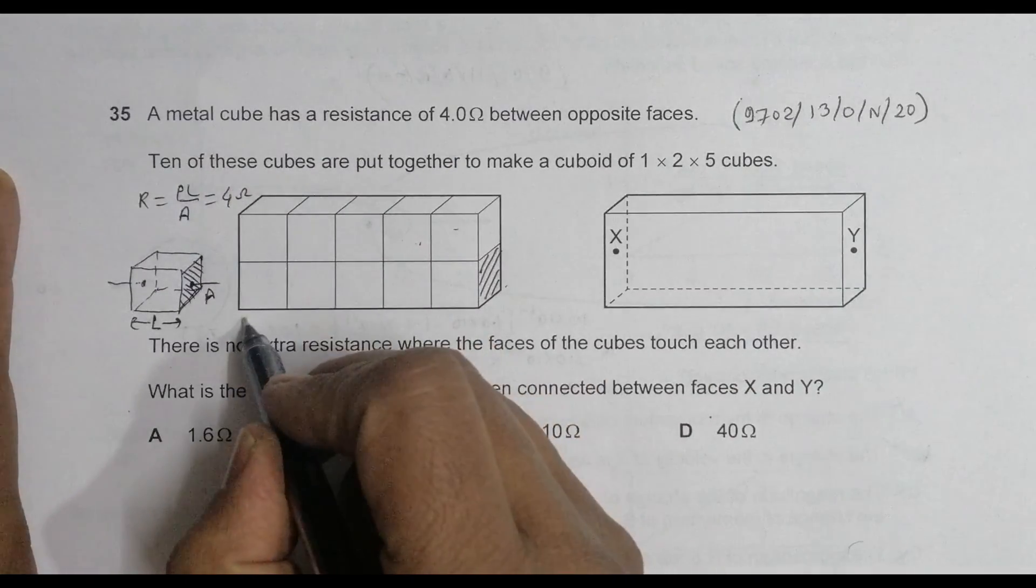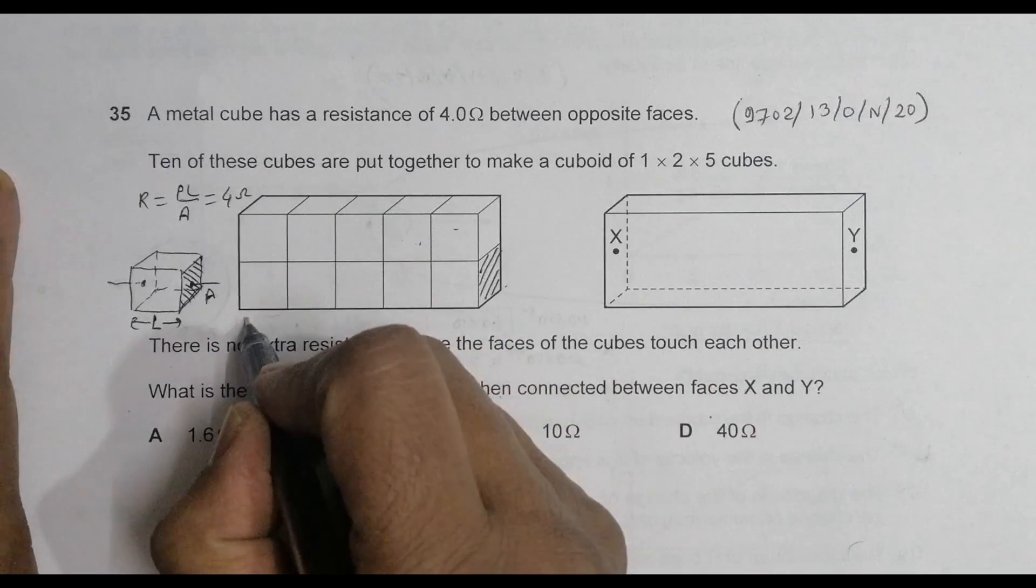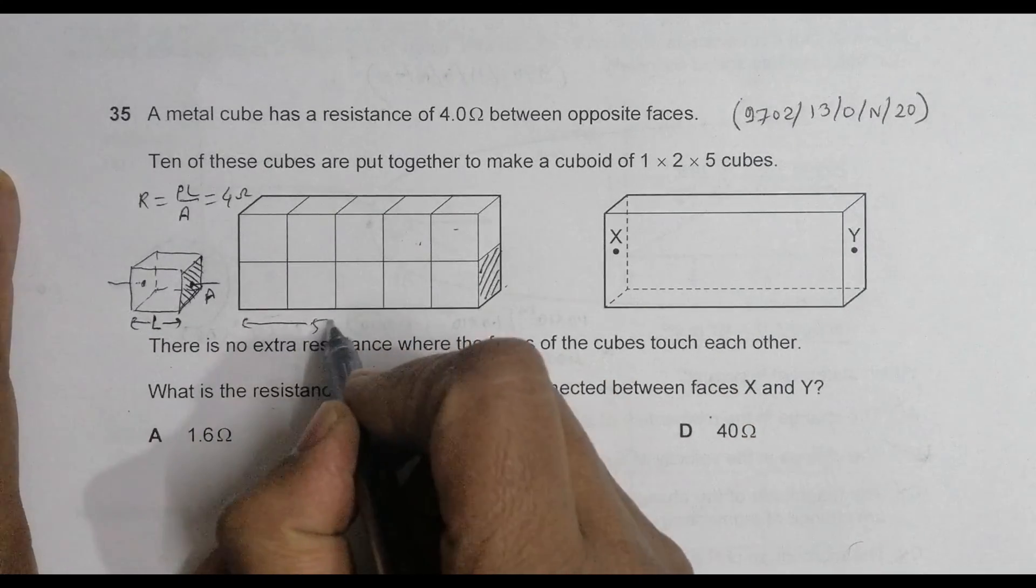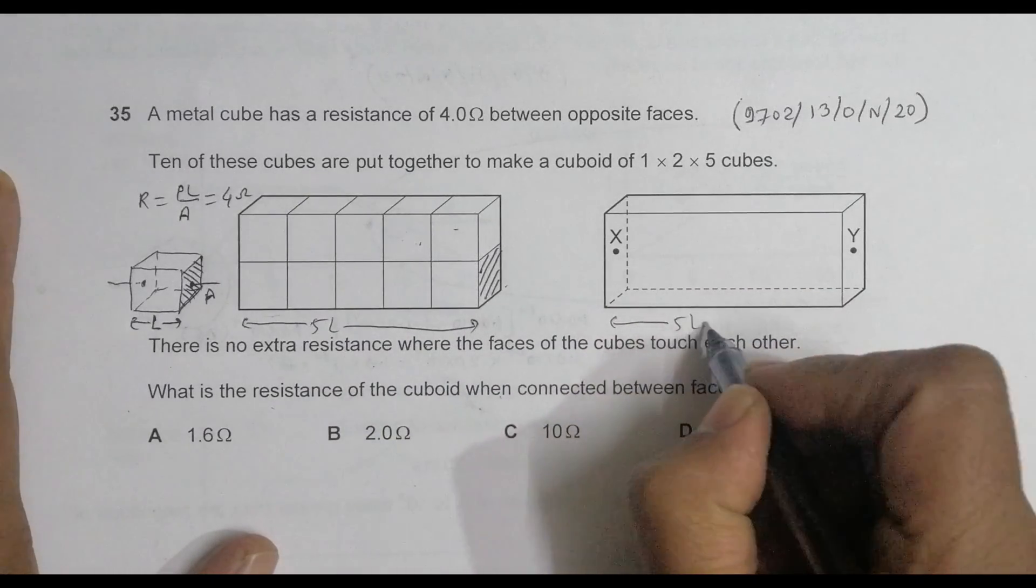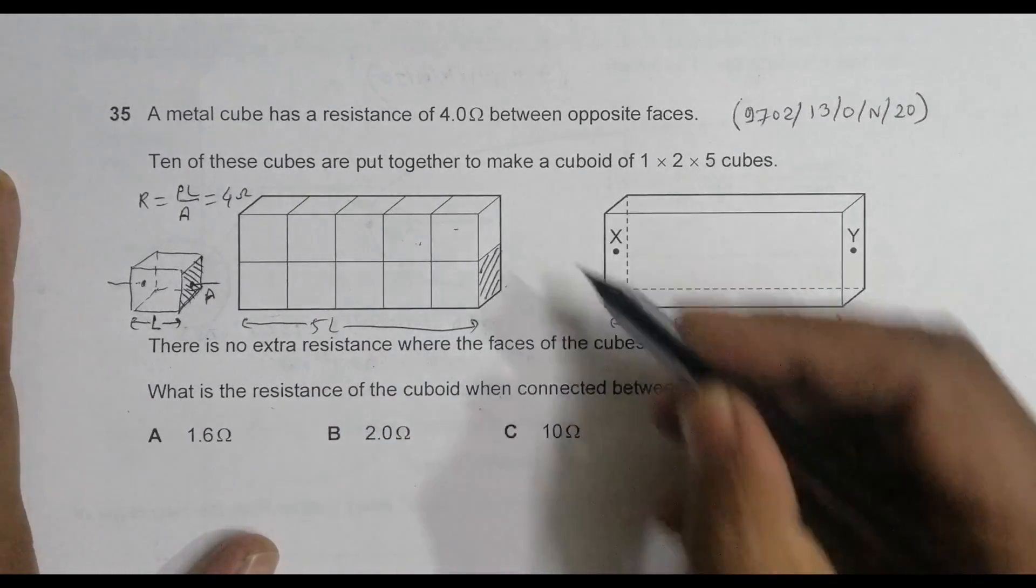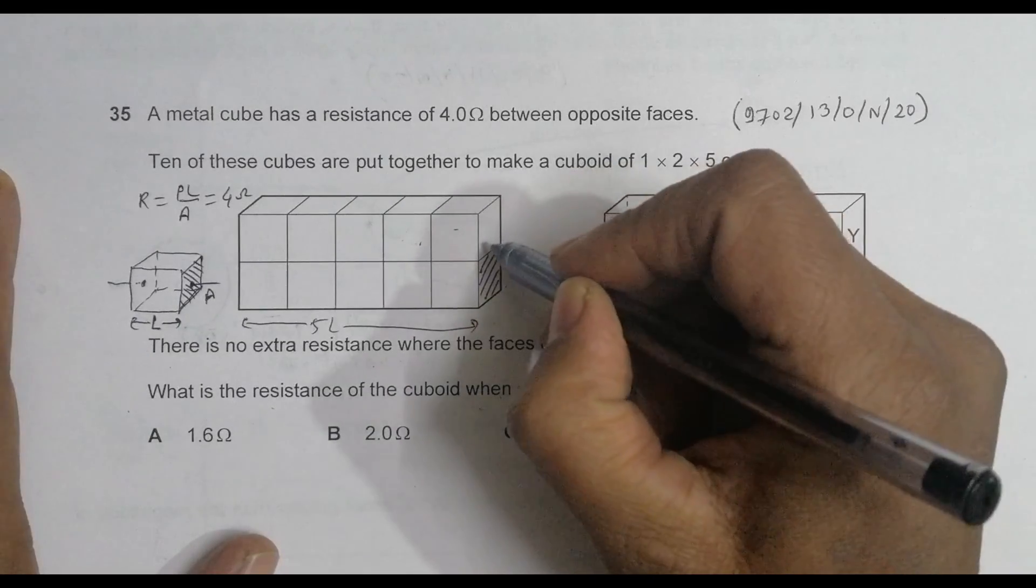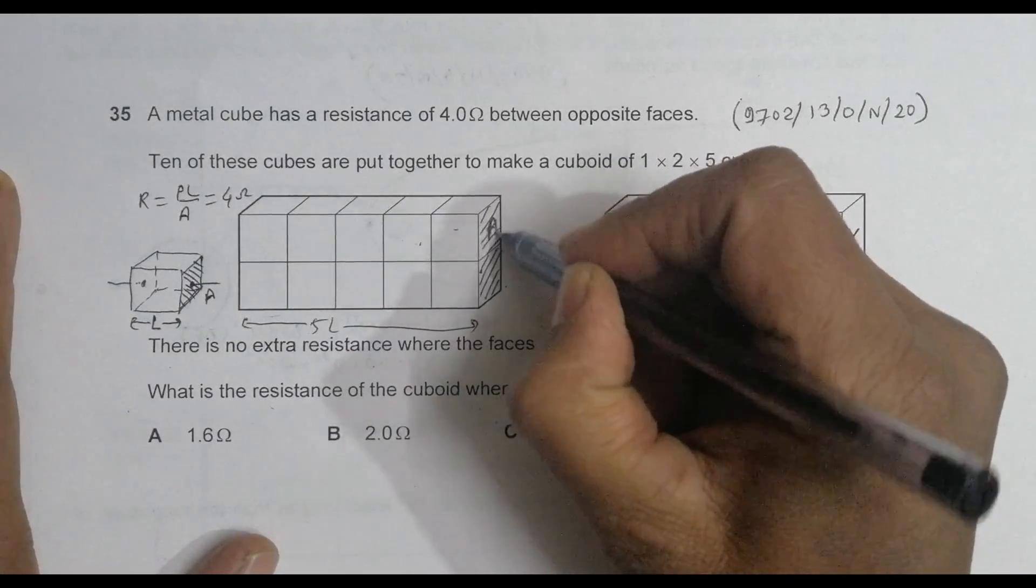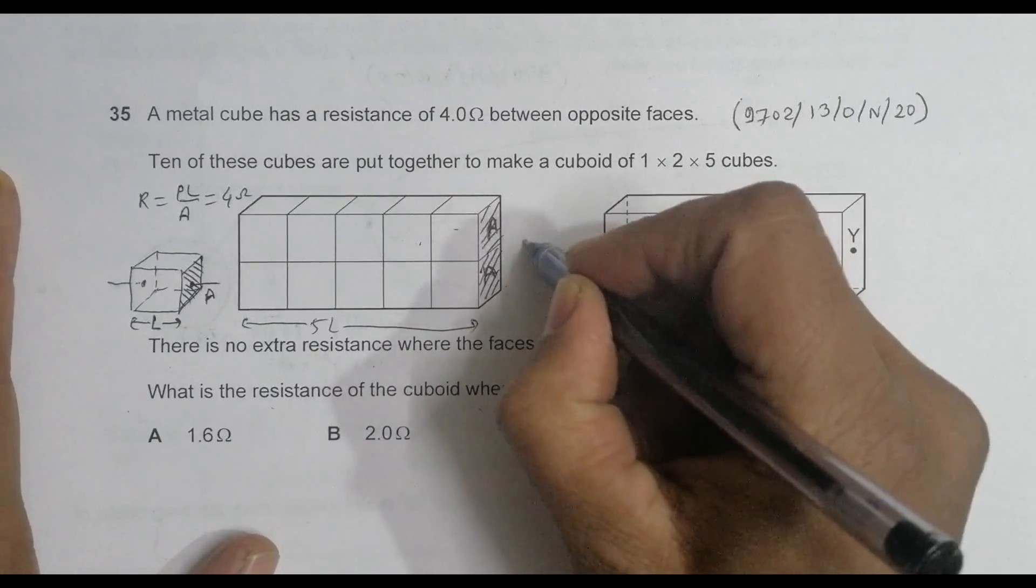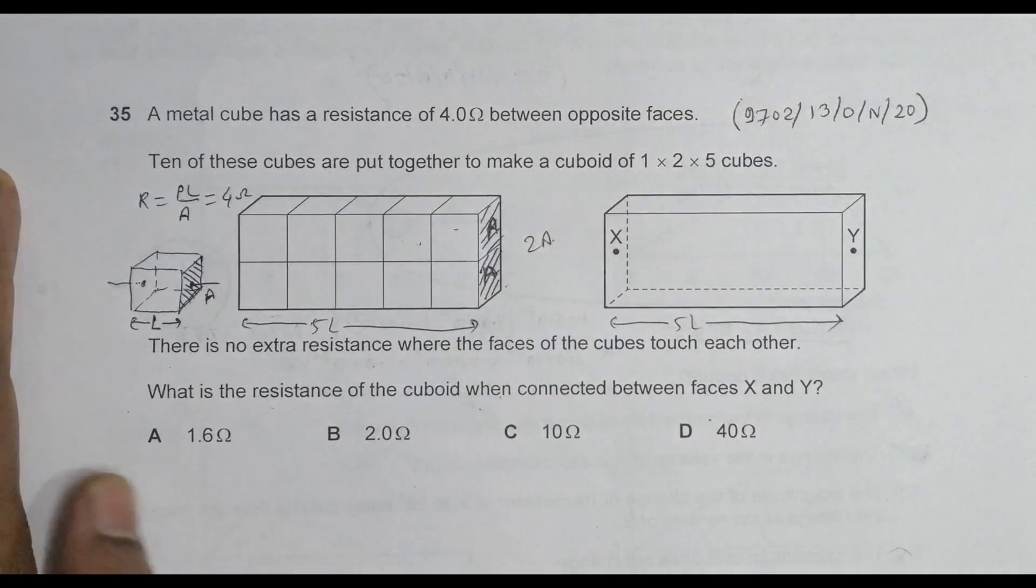Now if we consider this thing, then the length will be five times, will be equal to 5L. So this is 5L. Then the area will be A and this is also A, and A and A will be 2A.